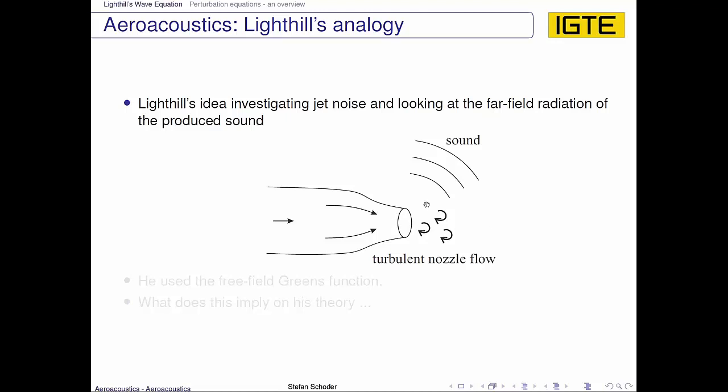A fluid jet produces some vortical and turbulent structures, and these vortical and turbulent structures radiate sound. This radiated sound in the far-field was the subject of interest for Lighthill. And as was prominent at his time, he used the free-field Green's function to capture or prescribe this radiation of the sound.